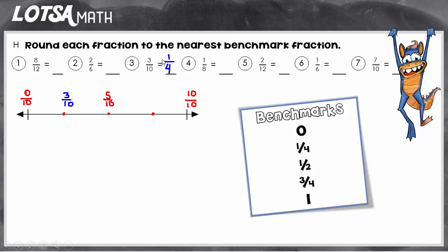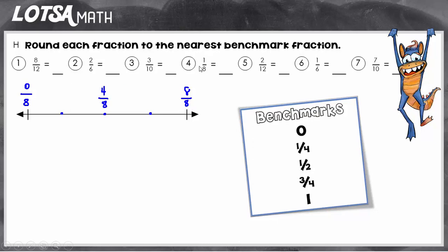On number four, I have one-eighth, so I have to imagine this number line now representing eight parts — right in the middle, and then the fourths, or the middle of those. So this would represent zero-eighths, and this would represent eight-eighths, and right in the middle is four-eighths. So I'm going to put my fraction one-eighth where I think it would go — I think one-eighth would be right around here. Now I have to decide which benchmark one-eighth is closest to. It looks like it's pretty close to zero-eighths or one-fourth, so we're going to go ahead and round up and say that one-eighth is closest to one-fourth.